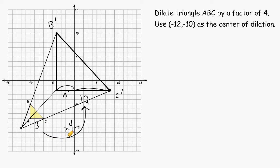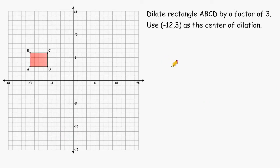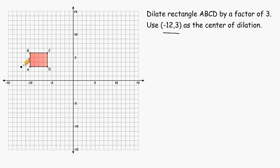Let's try dilating another example. For this example, we have to use negative 12, positive 3 as the center of dilation. First, let's locate the center of dilation, which would be located right here. The next thing we want to do is determine the distance of the center of dilation to each one of the points of rectangle ABCD. Let's start with the distance from the center to point A. We would have to move a distance of 2 in the x direction to get to point A, but notice we don't have to move up or down in the y direction.